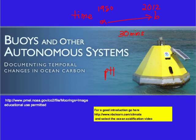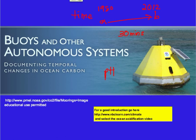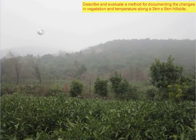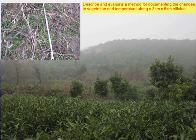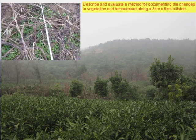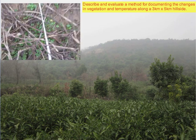For a complete discussion of the Bermuda Platform ocean acidification case study, please visit the NBC Learn website. Finally, I would like you to describe and evaluate a method for documenting changes in vegetation and temperature along a 3 km by 5 km hillside.